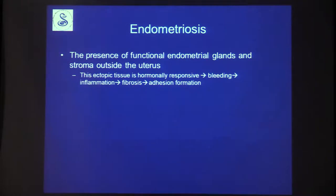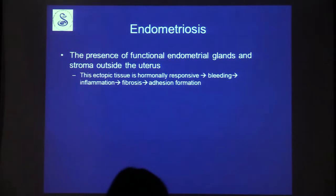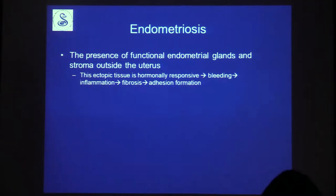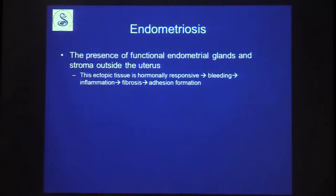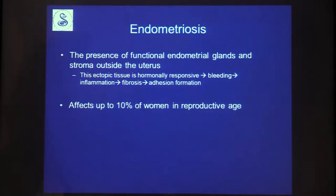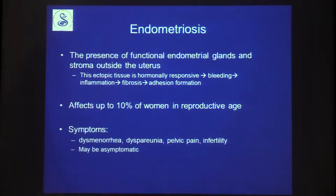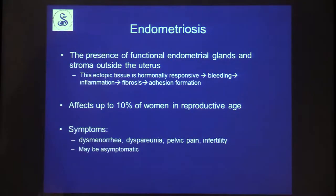Endometriosis is the presence of functional endometrial glands and stroma outside of the uterus. This ectopic tissue is hormonally responsive, so it can cause bleeding. Bleeding can lead to inflammation, fibrosis, and adhesion formation — all things we can see on MRI. It affects about 10% of women in reproductive age, causing painful menstruation, pain during intercourse, pelvic pain, and infertility, and it may be asymptomatic.